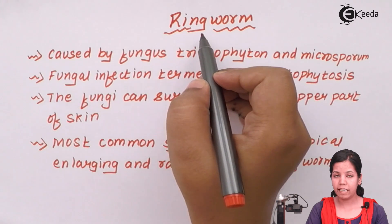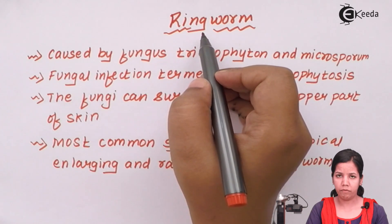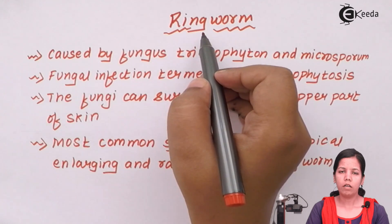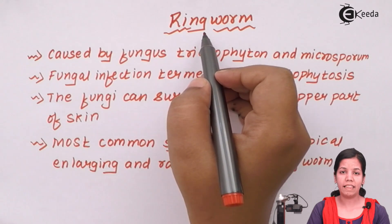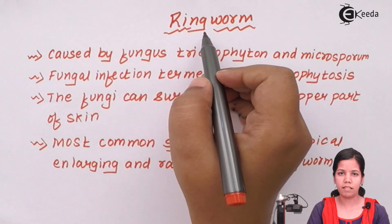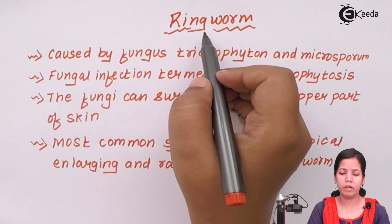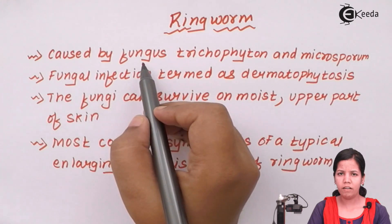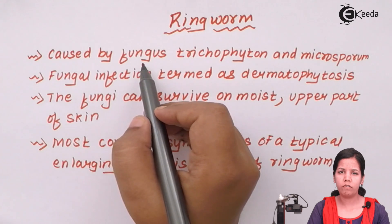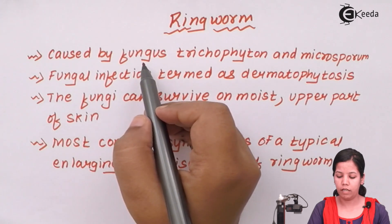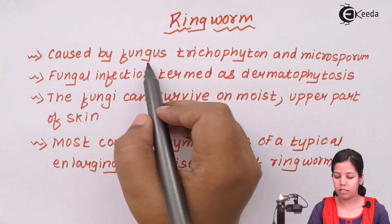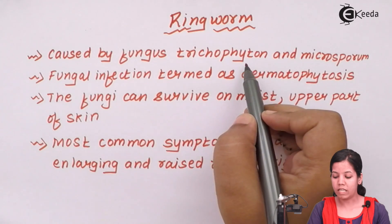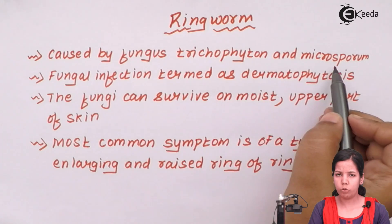Ringworm is basically a fungal infection which is not as hazardous as AIDS or cancer, but it can cause inflammation and itchiness. This fungal infection can also occur in most individuals if the immune system is below a certain level. It is caused by a fungus known as Trichophyton, and it could also be the Microsporum type of fungus.